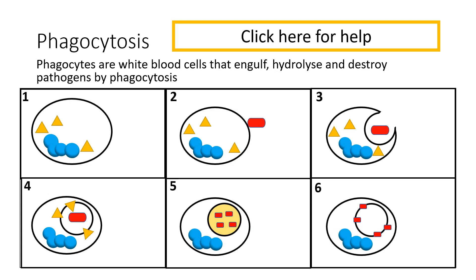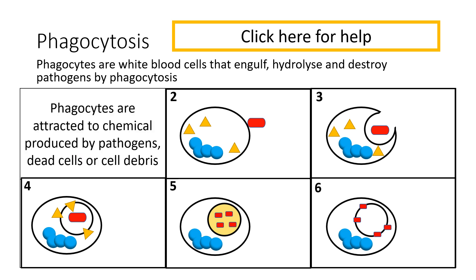At GCSE we refer to white blood cells, but at A-level we must use the terms lymphocyte and phagocyte. In terms of phagocytosis, we focus on phagocytes. Phagocytes are a particular type of white blood cell, and inside phagocytes there are large numbers of lysosomes. A phagocyte is attracted to chemicals that are produced by pathogens.